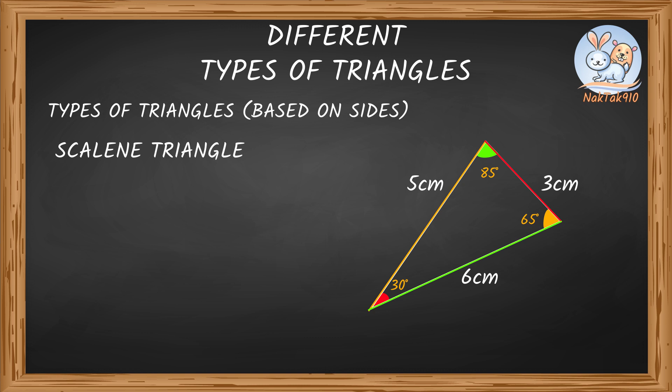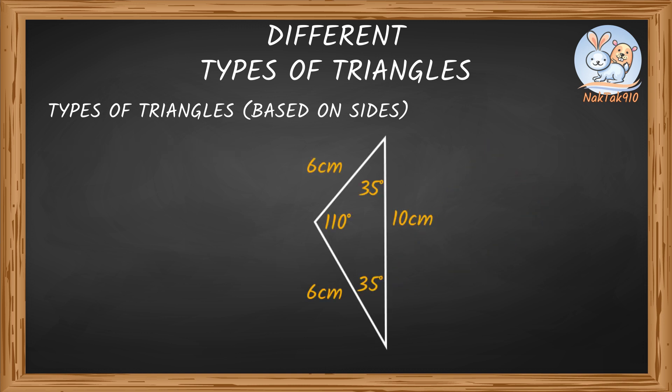Now that we have learned different types of triangle based on sides, tell me what type of triangle this is. Friends, do you want to help me? Let's do it together. Two sides are 6 centimeters, so two equal sides and two equal angles each measure 35 degrees. So this is an isosceles triangle. Right? That's correct.